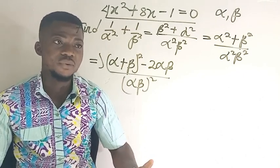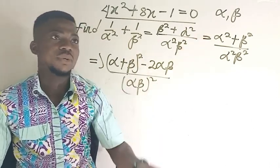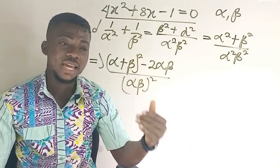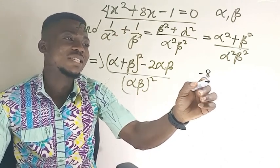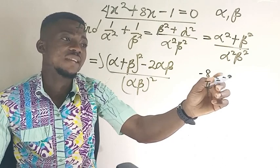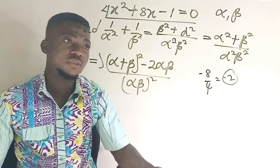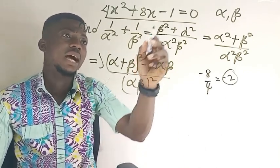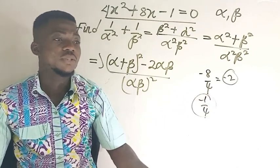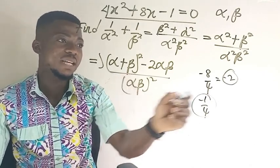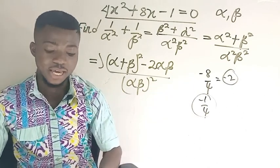Alpha plus beta represents the sum of the roots, and that is given as negative b over a. So negative b gives us negative 8 over 4, which gives us negative 2. So therefore the sum of the roots is negative 2. Then the product of the roots is c over a, that's going to be negative 1 over 4. So where we see alpha plus beta, we'll put negative 2, and where we see alpha times beta, we'll put negative 1 over 4.